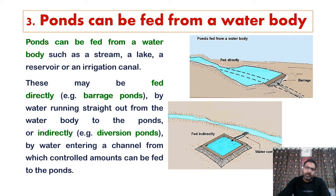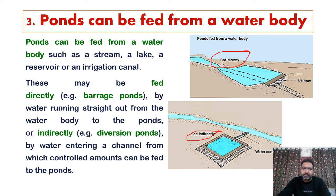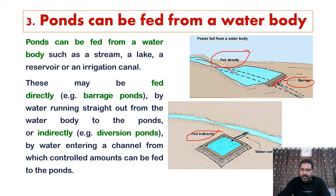The third kind of ponds are those fed from a water body such as a stream, lake, reservoir, irrigation canal, rivulet, or brook. They may be fed directly — water gets directly into the pond; we call such ponds barrage ponds because a small barrage is built, and water enters from one side and exits from the other.